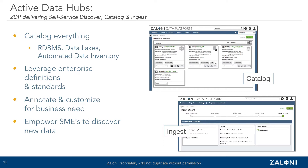Another feature that's really important is the ability to leverage your existing enterprise definitions and policies that might have been defined in data governance or metadata tools. You've spent a lot of money and time to build out definitions, business glossary terms, and models, and you want to be able to reference that from a single active data hub. Being able to pull in glossary terms or link those things in allows the producers and consumers of data to get the most comprehensive view of all of the information in a single search.